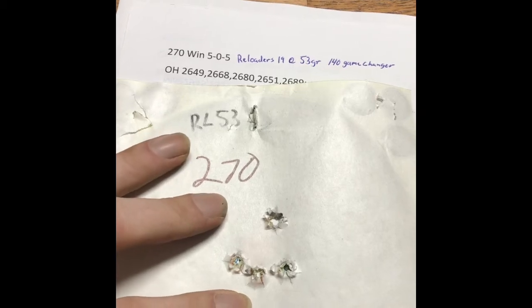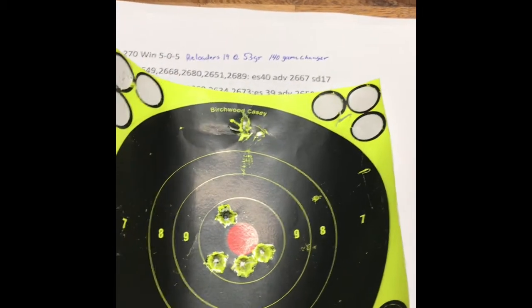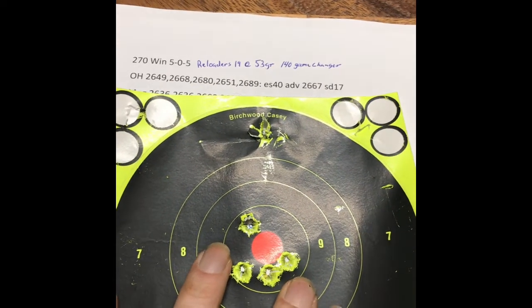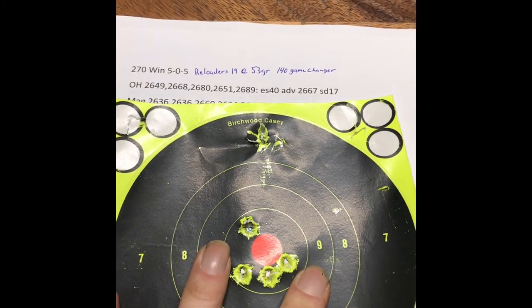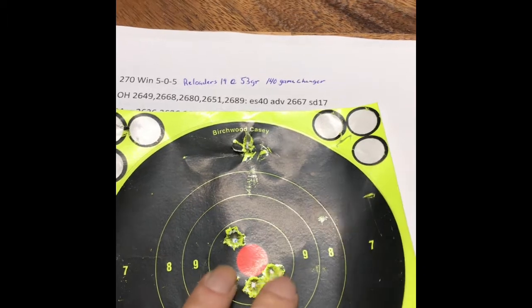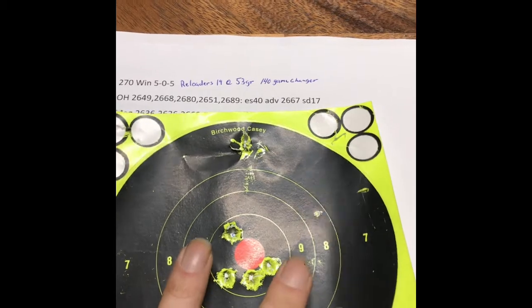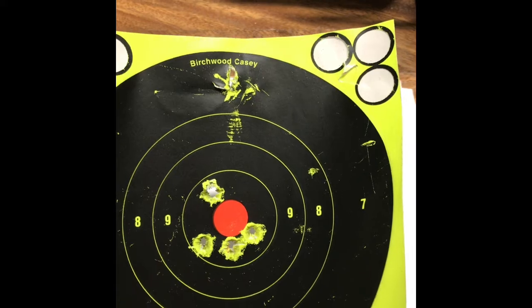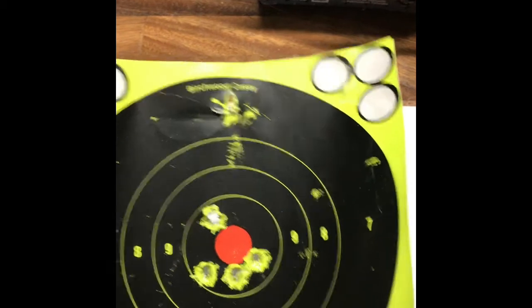This was 53 grains of Reloader 19, and that's what I tested. This was with the Oehler Chronograph. I had those velocities somewhere else, but it did this four shot group. I was being stingy, and I know that my barrel is a pencil light barrel, and all I was doing was doing four shot groups, because I wanted to see what it would actually be like.